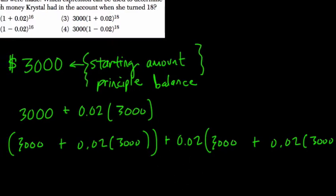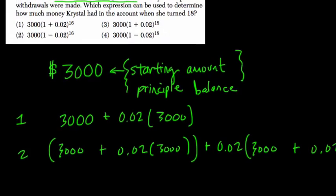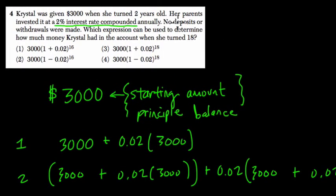So let's go back to this. What do they want to know? Before we start to really get into the heart of this, let's write this thing out. Let's figure out what they're asking. No deposits or withdrawals are made. So deposits are when you put money into an account, and withdrawals are when you take money out of an account. Which expression can be used to determine how much money Crystal had in the account when she turned 18?